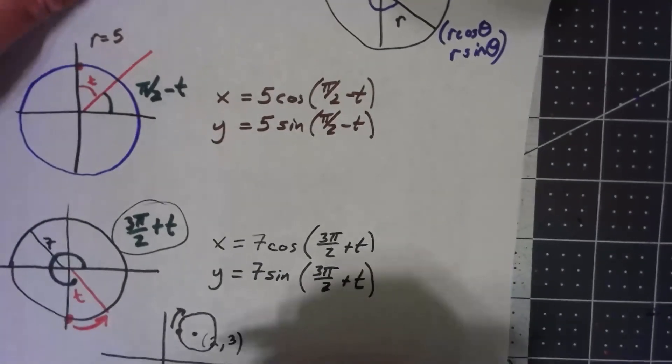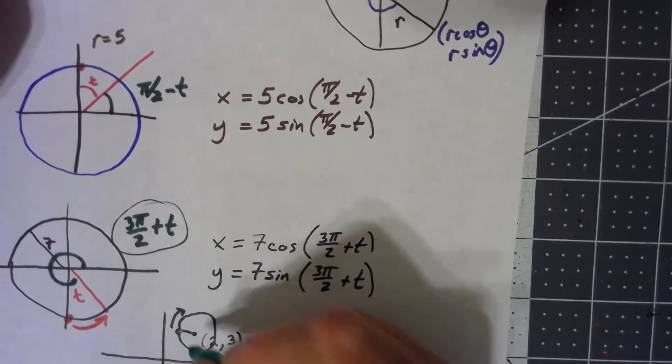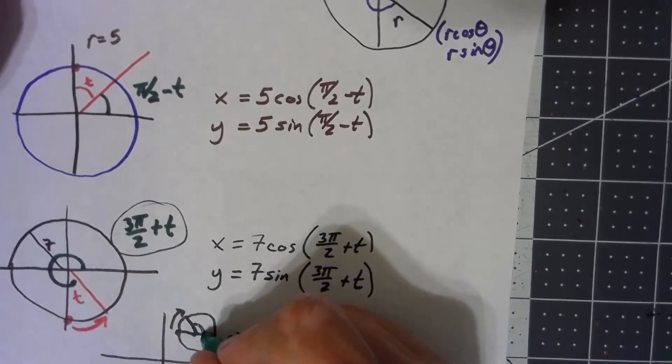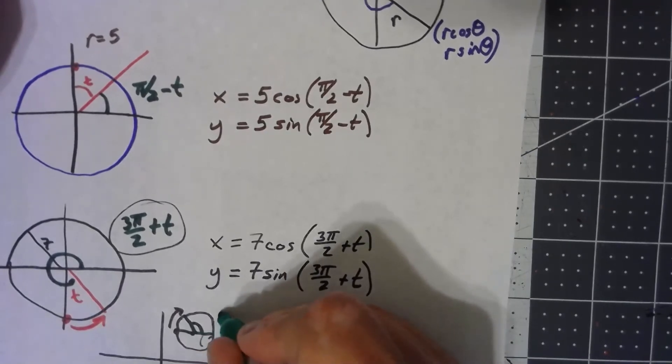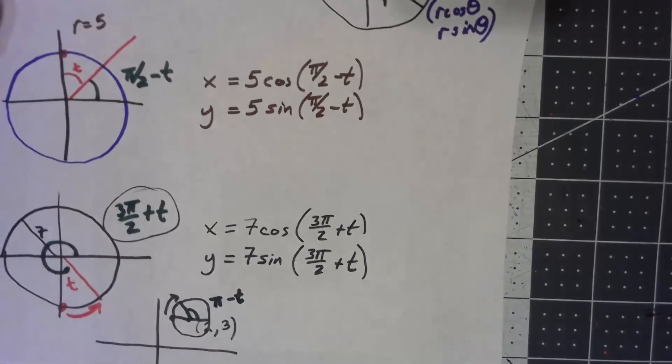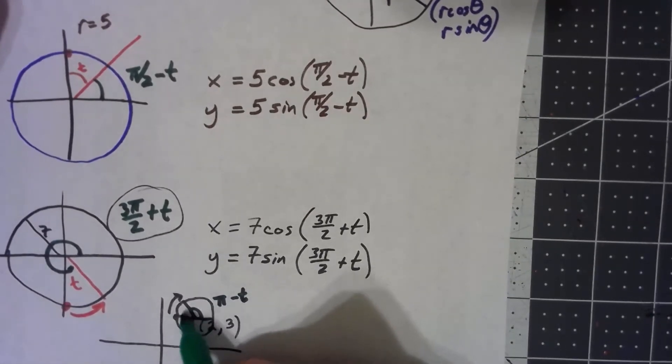I'm going to do basically the same thing. My angle starts at pi, so this angle here would be pi minus t. I'm subtracting the angle I went through from that.